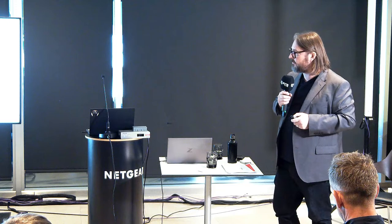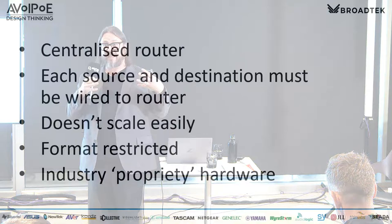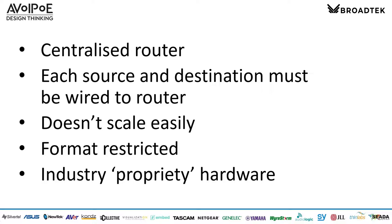Why IP? Traditional infrastructure — we've been routing signals for decades, sending signals around buildings and different places for a long time. Typically that's meant a centralized router: a box with X number of ins and X number of outs. When you buy it, it's got that number of inputs and outputs on it, and you'll probably never change it unless you throw it away and buy another one.